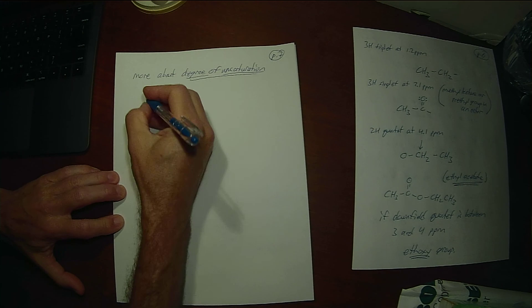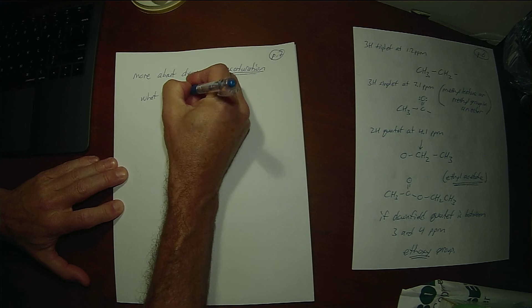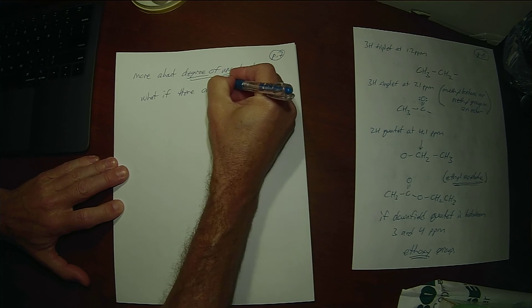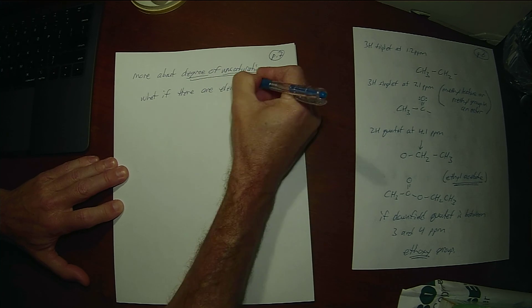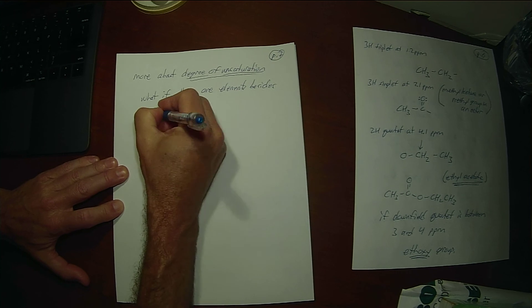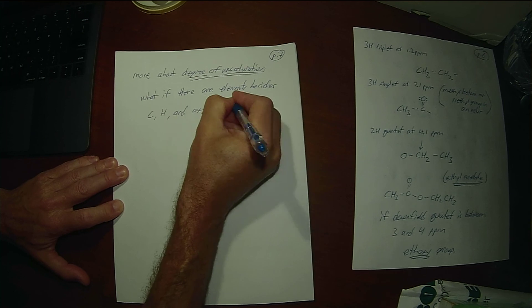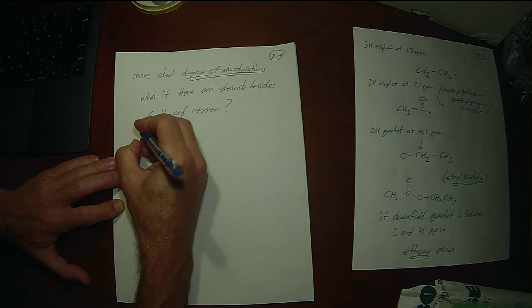So more about degree of unsaturation. What if there are elements in there besides carbon, hydrogen, and oxygen, like nitrogen or halogens?